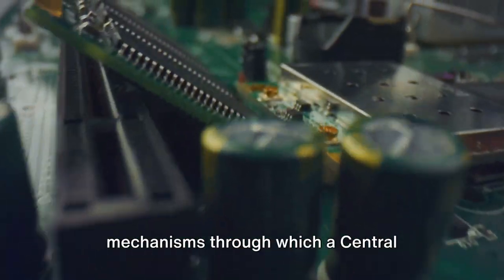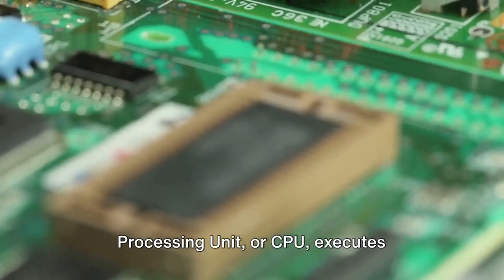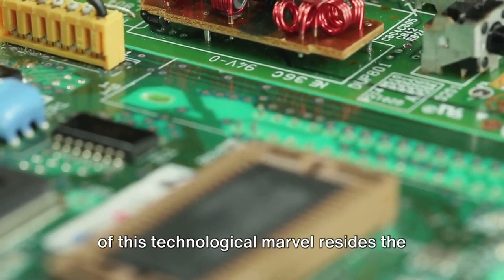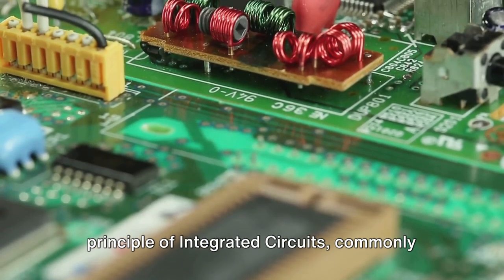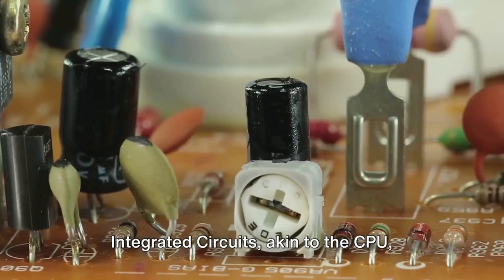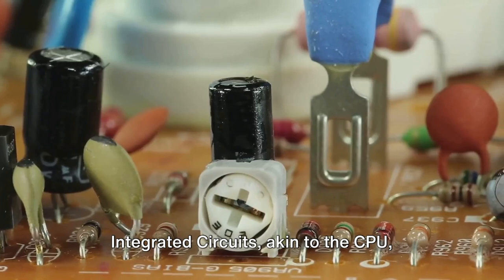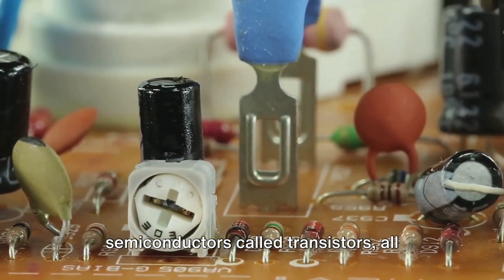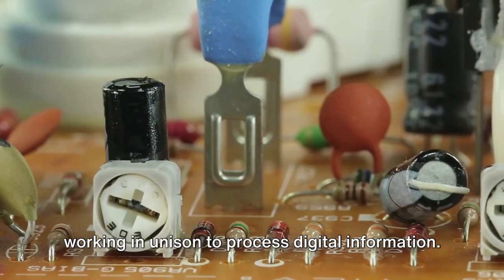Have you ever contemplated the complex mechanisms through which a CPU executes intricate calculations? At the very crux of this technological marvel resides the principle of integrated circuits, commonly abbreviated as ICs. Integrated circuits, akin to the CPU, fundamentally constitute an assembly of semiconductors called transistors, all working in unison to process digital information.